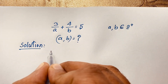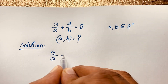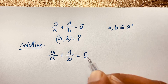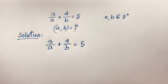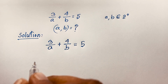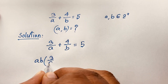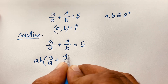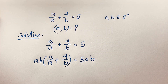First of all, I take our question: 3 over A plus 4 over B is equal to 5. I multiply both sides by A·B, so it becomes A·B times 3 over A plus 4 over B is equal to 5A·B.